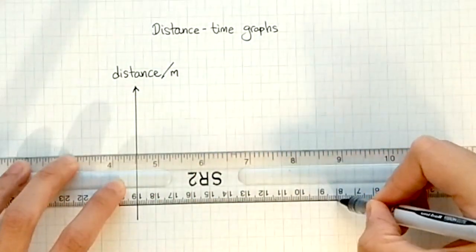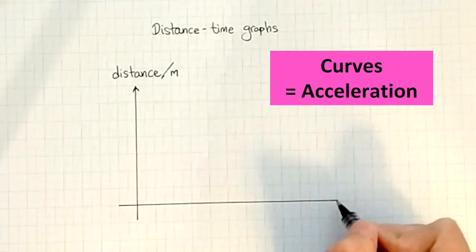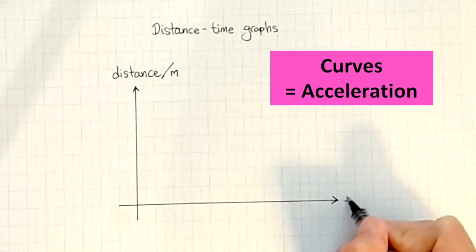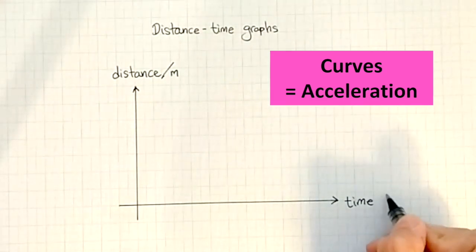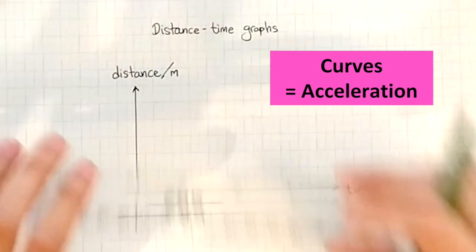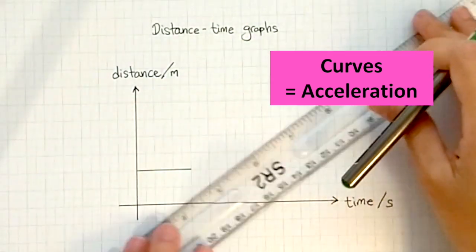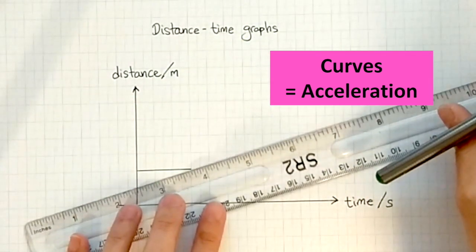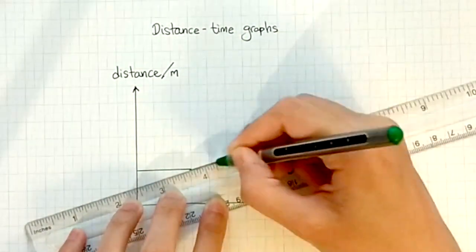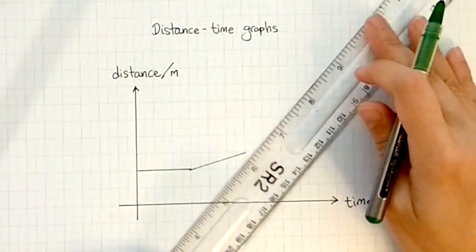Even though we can represent acceleration on a distance-time graph using curves, your exam board tends to use just straight lines and diagonal lines.